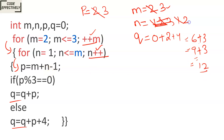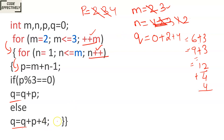N increments to 2. P equals M plus N minus 1: 3 plus 2 minus 1 gives P equals 4. 4 modulus 3 equals 0 — condition is false. So Q equals Q plus P plus 4: Q is 12, plus P which is 4, plus 4. That gives Q equals 20. The new Q value is 20.